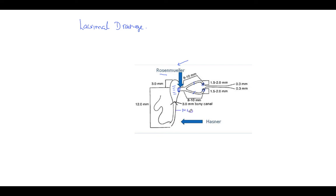From the lacrimal sac, this is the nasolacrimal duct. The nasolacrimal duct goes downwards, backwards, and laterally to open in the inferior meatus. There is a valve here called the valve of Hassner.